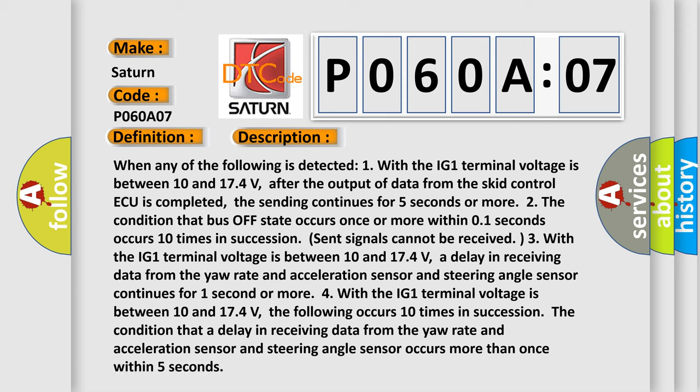And now this is a short description of this DTC code. When any of the following is detected: 1. With the IG1 terminal voltage is between 10 and 17.4 volts. After the output of data from the SKID control ECU is completed, the sending continues for 5 seconds or more. 2. The condition that bus off state occurs once or more within 0.1 seconds occurs 10 times in succession. 3. With the IG1 terminal voltage is between 10 and 17.4 volts, the following occurs 10 times in succession: The condition that a delay in receiving data from the yaw rate and acceleration sensor and steering angle sensor continues for 1 second or more.